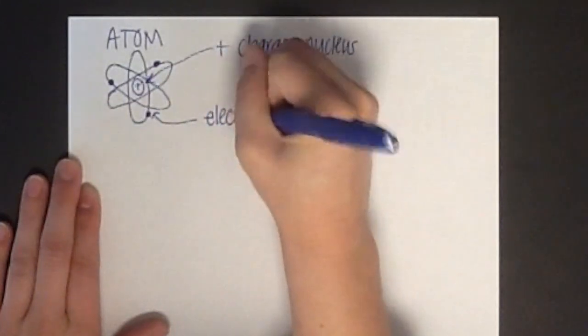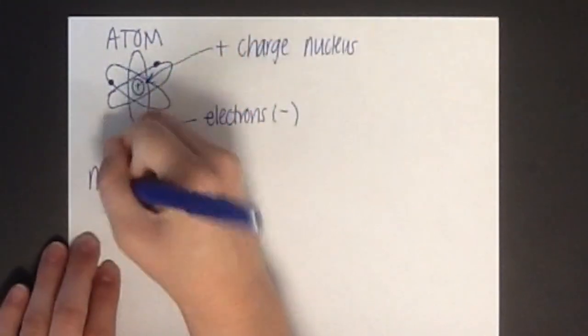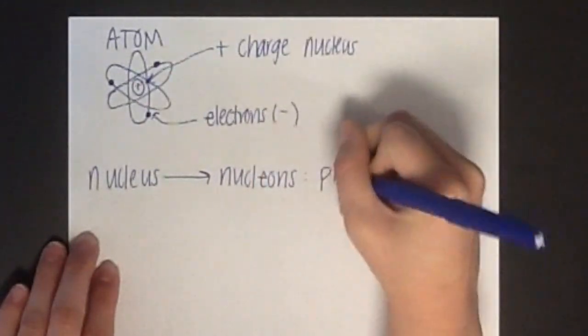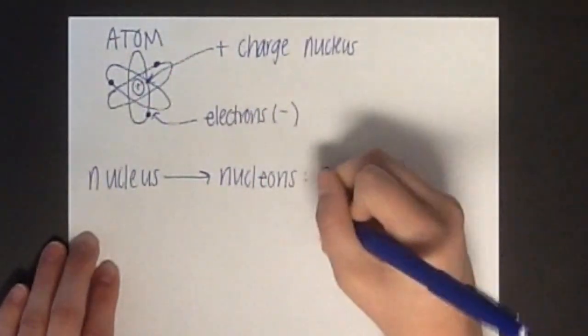The nucleus is composed of two kinds of particles collectively known as nucleons. These two particles are protons, which have a positive charge, and neutrons, which have no charge.